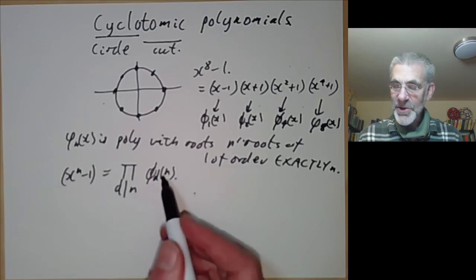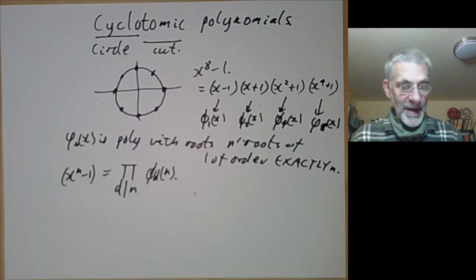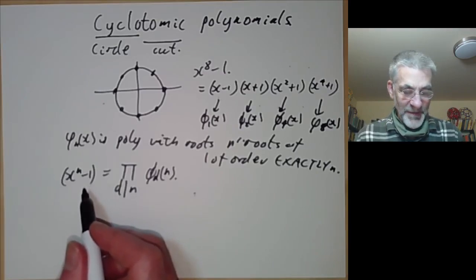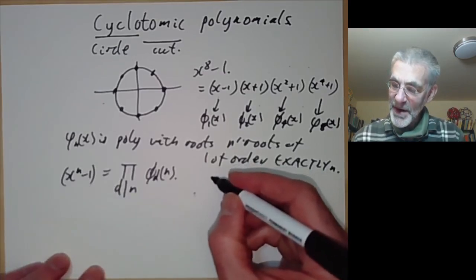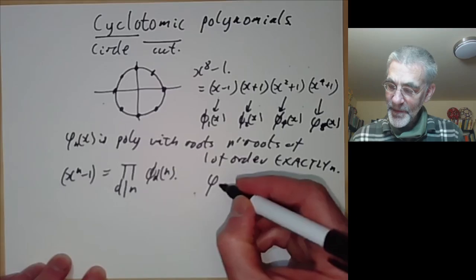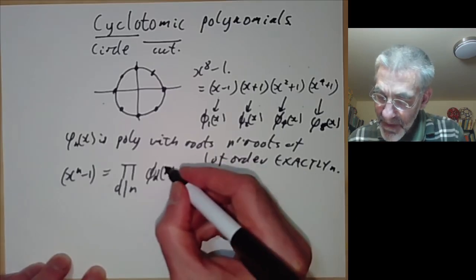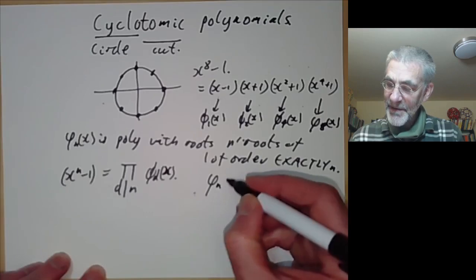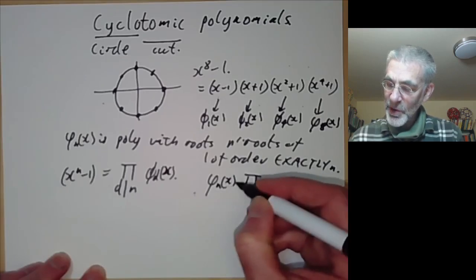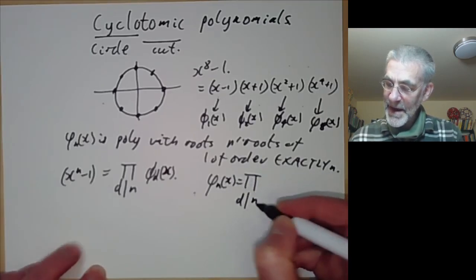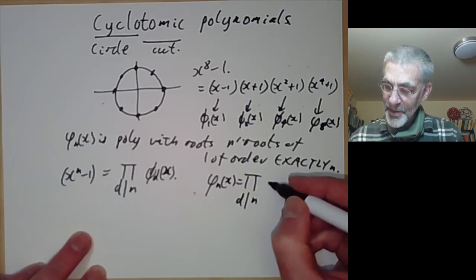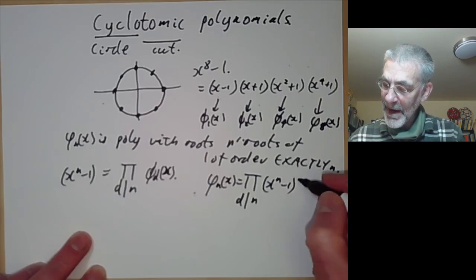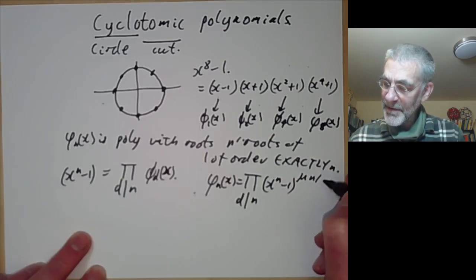From that you can check recursively that this polynomial has integer coefficients. And if you remember the Möbius inversion formula from number theory, this says that φ_n(x) can be written as a product over d dividing n of (x^d - 1) to the power of μ(n/d).